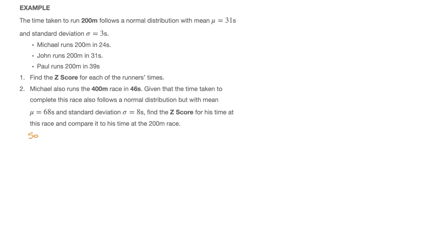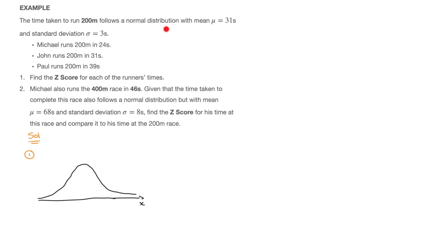Starting with question one, whether or not we're asked, it's always a good idea to illustrate the information on a bell curve — nothing particularly fancy, just a very generic bell curve. So this is my x-axis, and I draw a bell curve above it. We were told that we're dealing with a normal distribution whose mean mu is 31 seconds, so I'll add that mean right in the middle of the bell curve on the x-axis. That's mu equals 31.